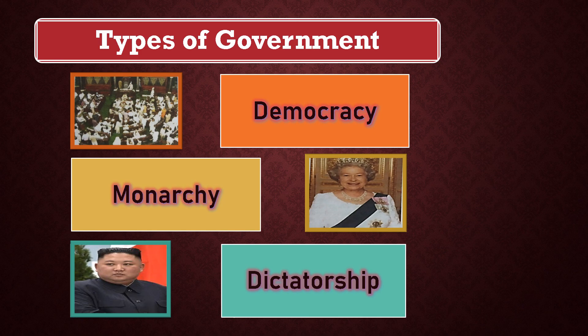The next and third form is dictatorship (tanashahi). In this form of government, there is a single ruler with absolute power. The entire administrative power is in the hands of one single ruler. Citizens have no rights — they are not given any kind of power or rights to interfere in any government matter or raise their voice. Countries like Iraq, North Korea, and Pakistan have seen dictatorship. So we have understood all three forms of government.